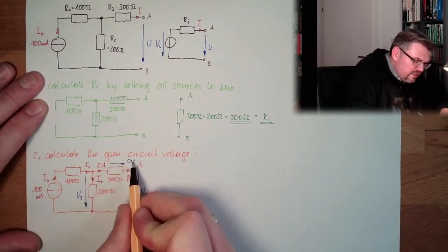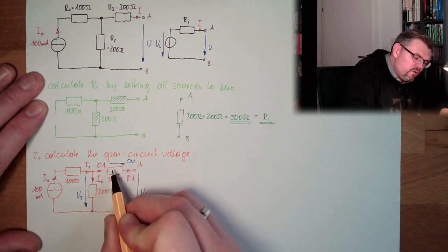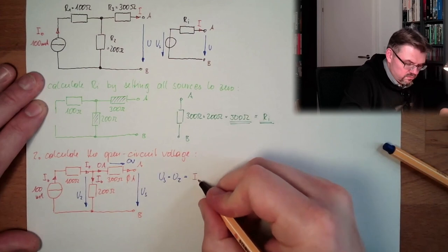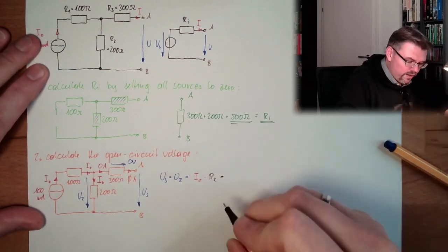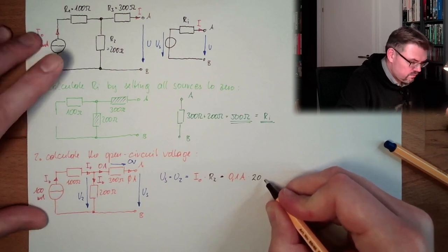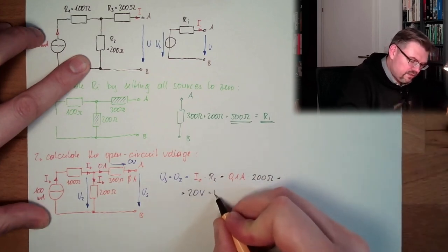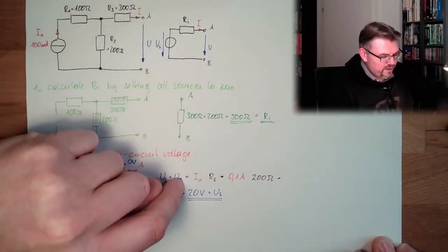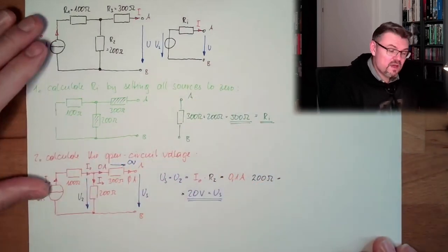US is our open circuit voltage, U2 is across R2, and zero volts at the open terminal. U2 and US are the same: U2 − US = 0, so US = U2 = I0 × R2 = 0.1 amps × 200 ohms = 20 volts. This is US. So we select US = 20 volts and Ri = 500 ohms, and those two circuits behave exactly the same.